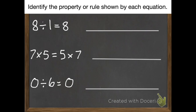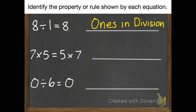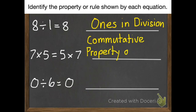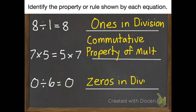The first one is division and there's a 1 in it, so it's ones in division. Next, we've changed our factors around, so that is commutative property of multiplication. And our last one is division with 0s in it, so it's going to be zeros in division.